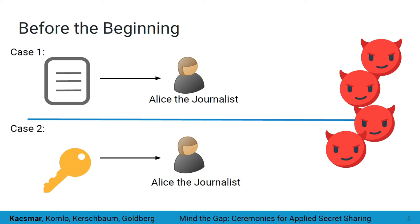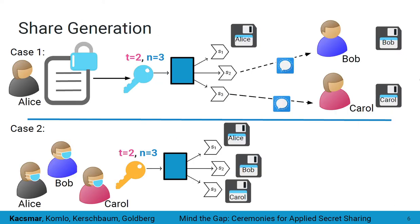In both cases, Alice, who is a journalist, has received highly sensitive information from a source. In case one, she has received a series of plain text documents, and in case two, she has received a key to a set of publicly released encrypted documents. Alice fears external parties will act against her to prevent her from disseminating this information, or in case two, that external parties may attempt to distribute the key in a way that could endanger individuals. She enlists the help of her colleagues Bob and Carol to reach her goals.